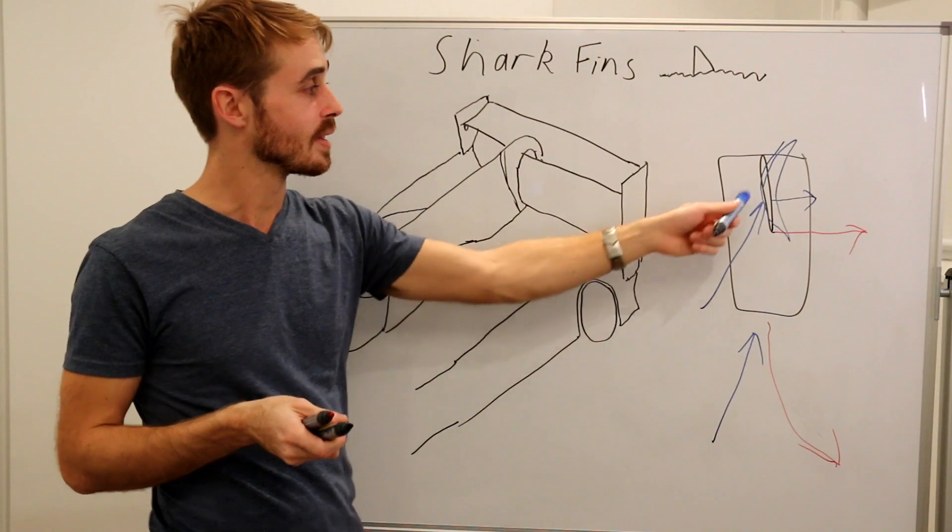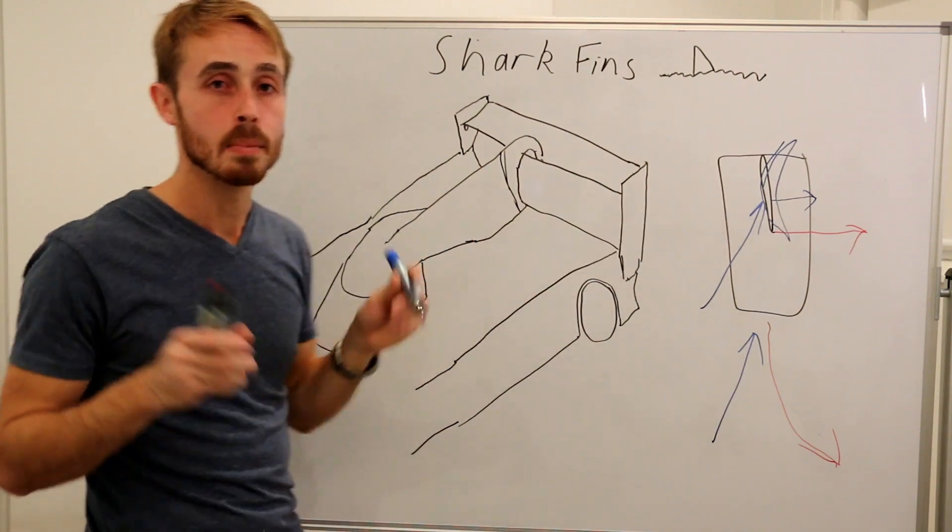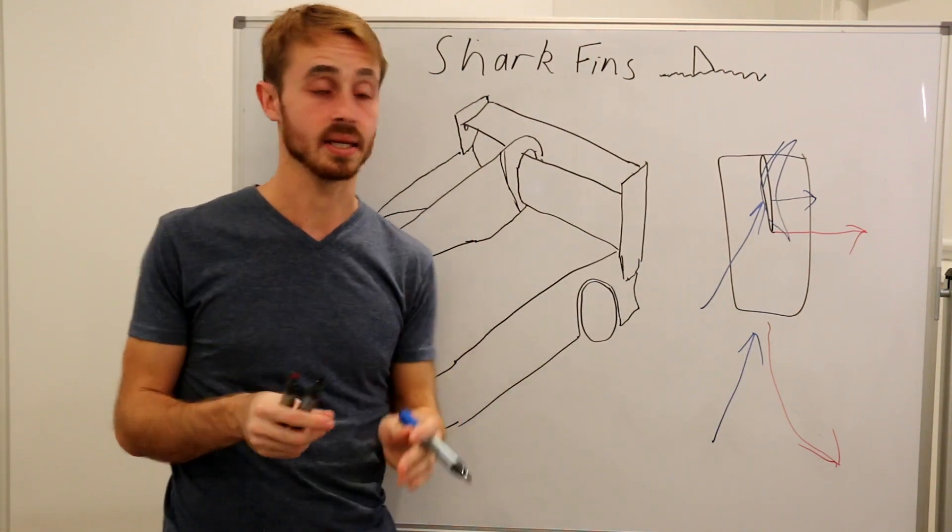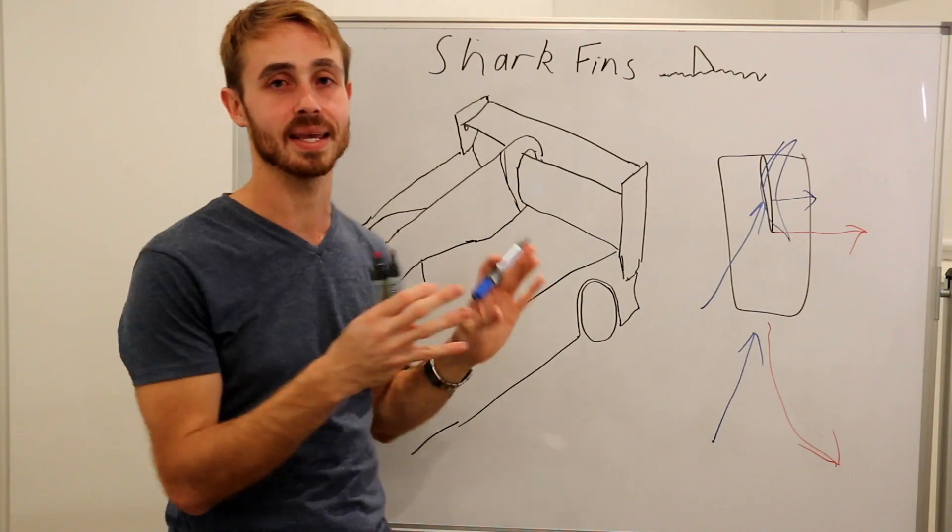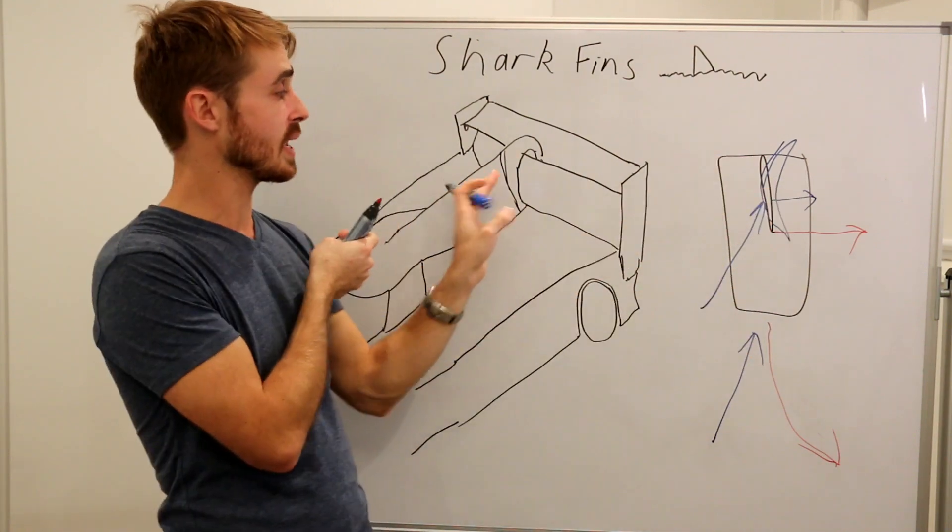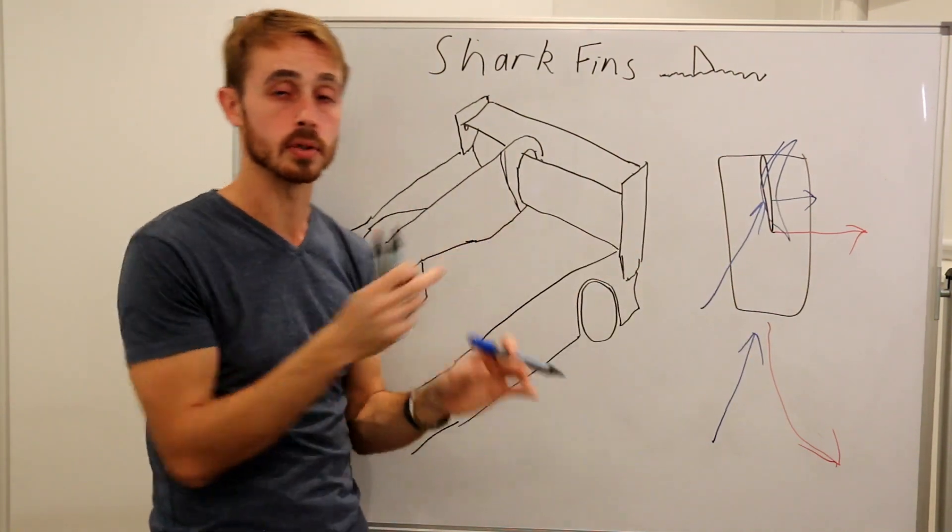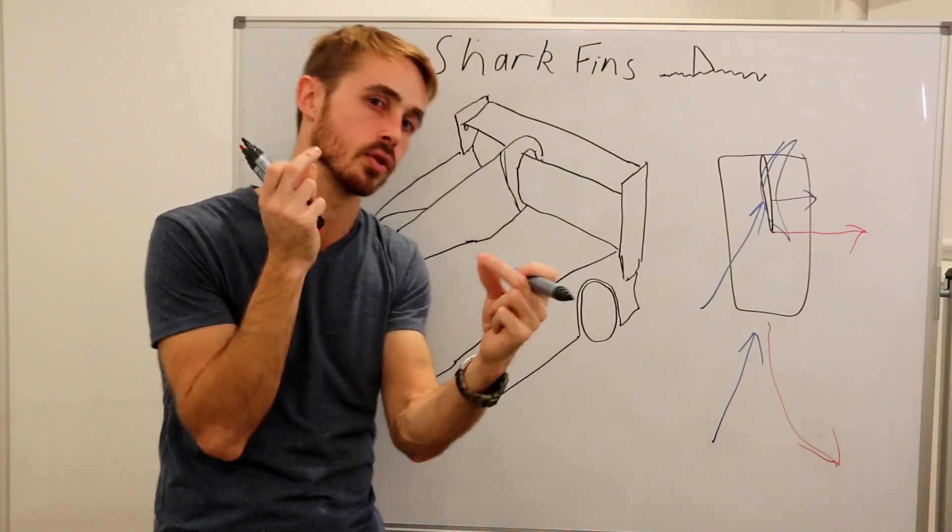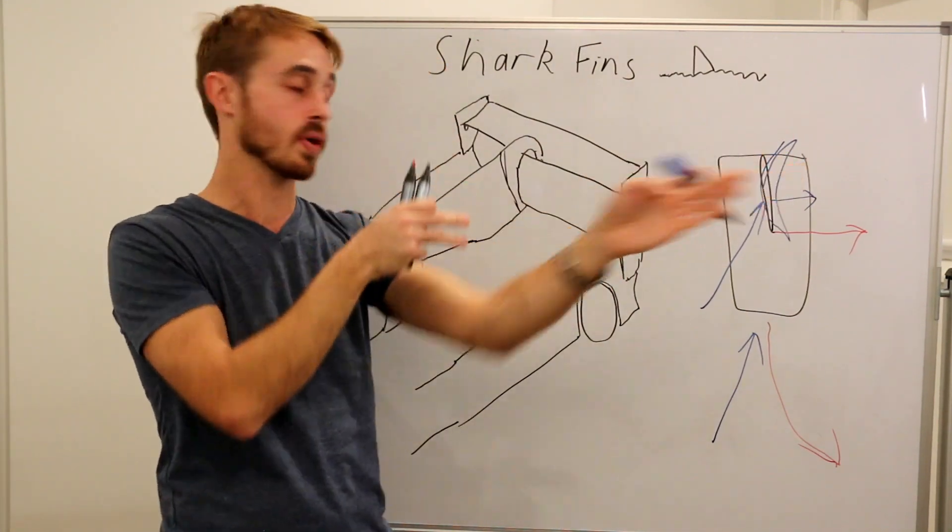Now speaking of yaw, this big plate here provides your stability. If you can imagine the car as being an arrow, this plate moves the center of pressure rearwards, which is the same as what the feathers do on an arrow, allowing it to track straight.